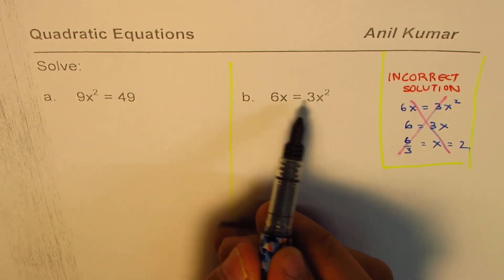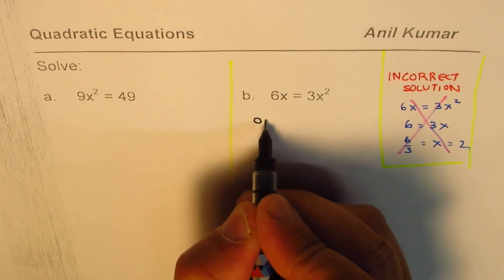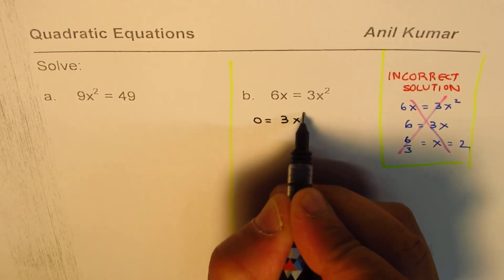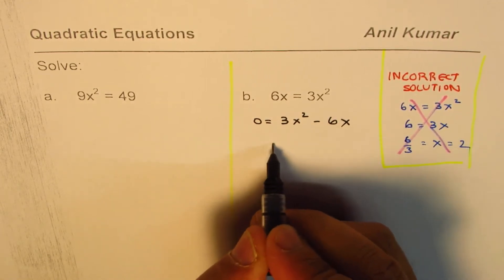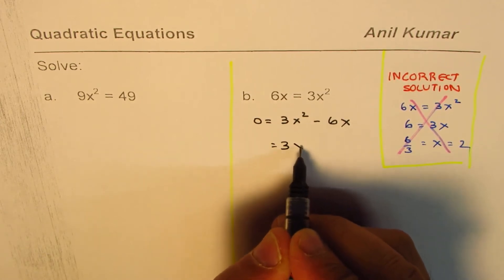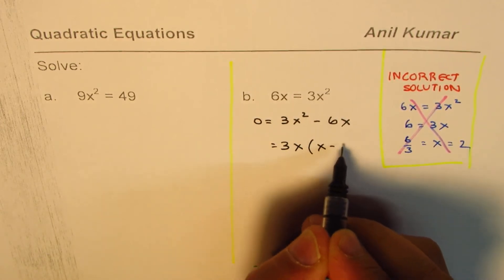So we have 6x equals to 3x squared. We could write this as 0 equals to 3x squared minus 6x. Now what is the common factor? 3 and the variable x. And you get x minus 2.